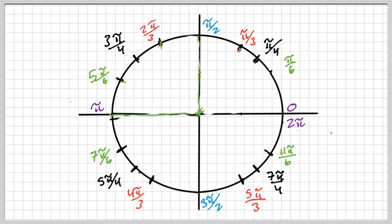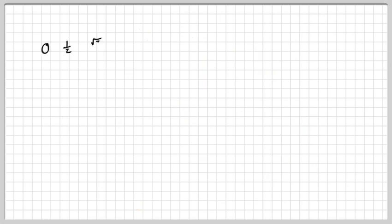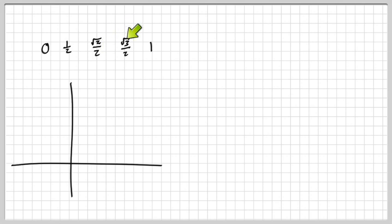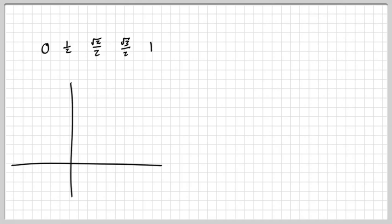The more you do it, the easier it'll get. After doing the angles, you need the coordinates for each of them. If you know the coordinates for the first quadrant, you can easily fill in all the others using reference angles. All the numbers you need to fill out the coordinates are: 0, 1/2, √2/2, √3/2, and 1. These five numbers are used to fill out all coordinates around the unit circle, and they're listed in order from least to greatest — that's very important. You could even put a square root sign over the 1 so they all have square roots.